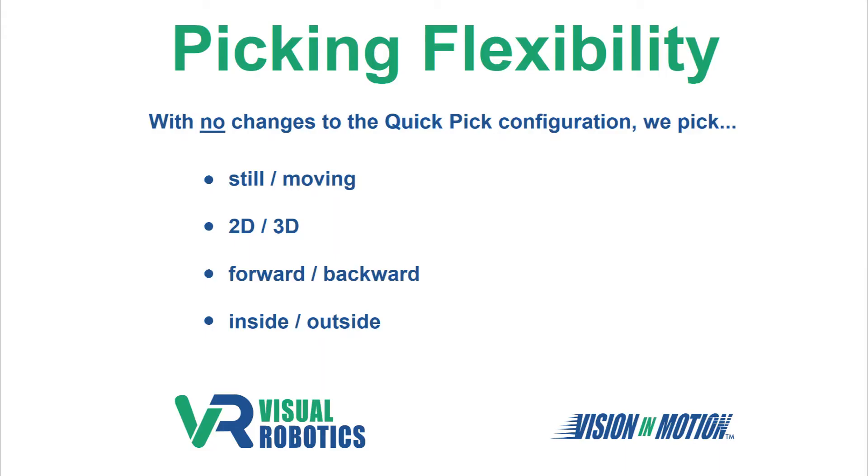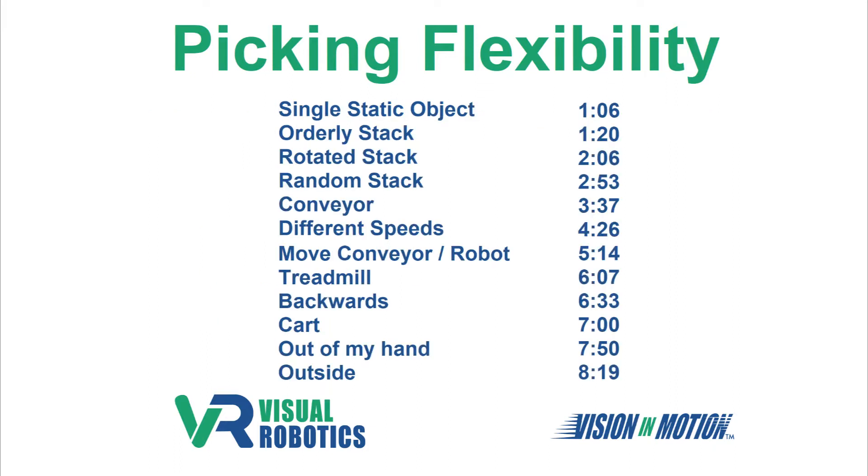I will demonstrate that with no changes to the Quick Pick configuration, we will pick still and moving objects, 2D and 3D stacks of objects, moving forward and backward, inside and outside. Here is a list of time codes if you want to skip ahead to what interests you.